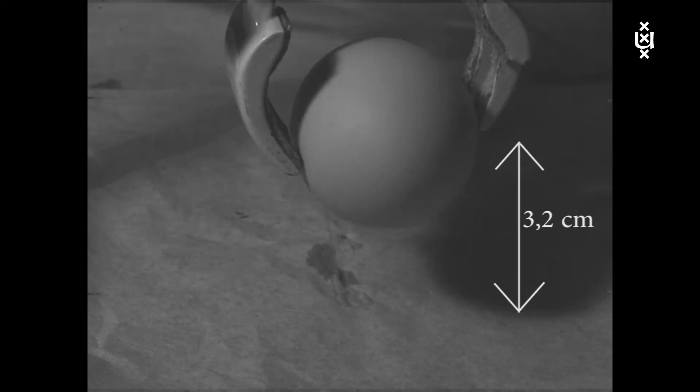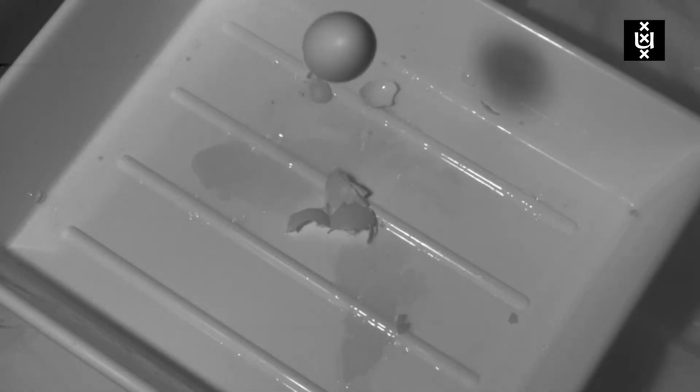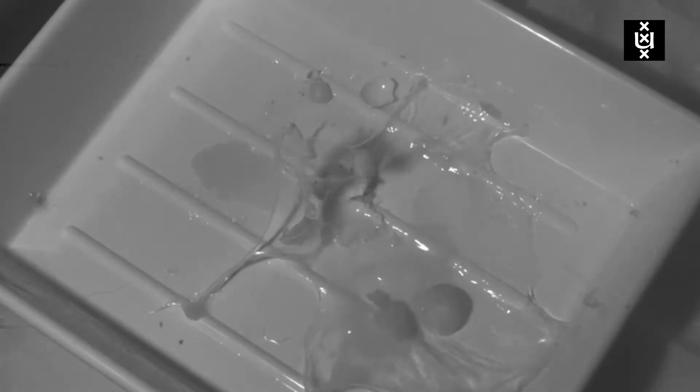Dropping an egg on a solid surface we need 3.2 centimeters before the egg started breaking which is equal to 38 newtons, which is pretty much the same as in our force experiment.